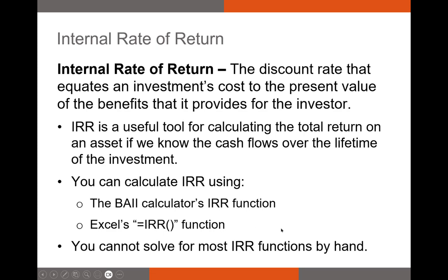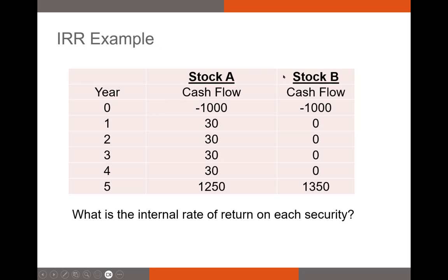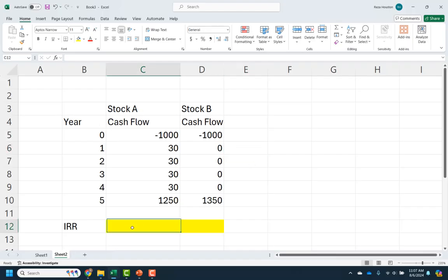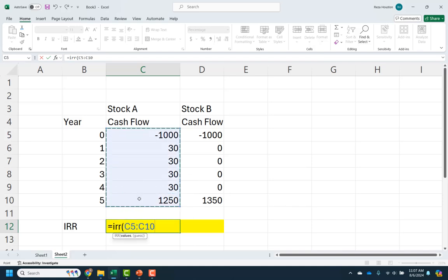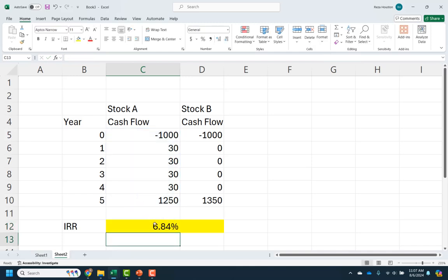Here we have two stocks and their cash flows. We invest $1,000 in each — the negative $1,000 indicates a cash outflow from the investor's perspective, and positive values are cash inflows. In Excel, we just use the equals IRR formula and highlight the cash flow stream. We can copy this formula over for the second stock.